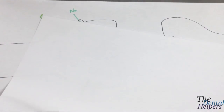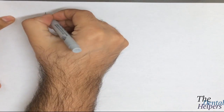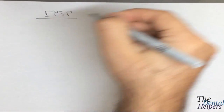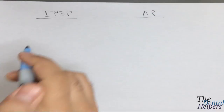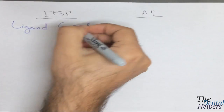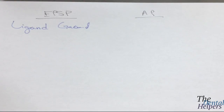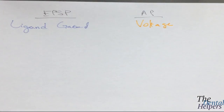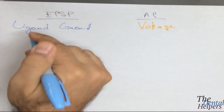It's important to remember that an EPSP is different from an action potential. Comparing the two: the EPSP is ligand-gated, while the action potential is voltage-gated. In terms of the potential itself, the EPSP is a graded potential.